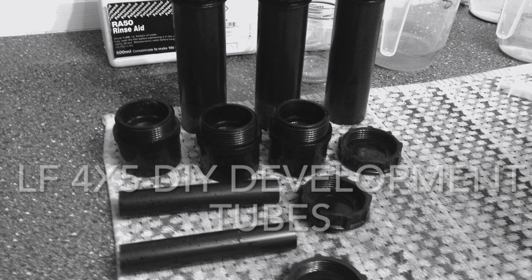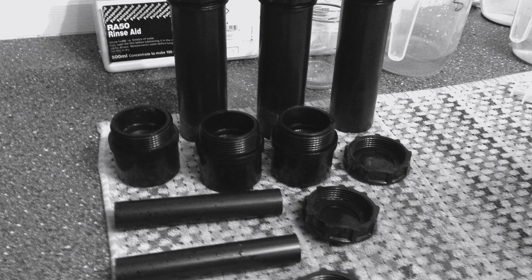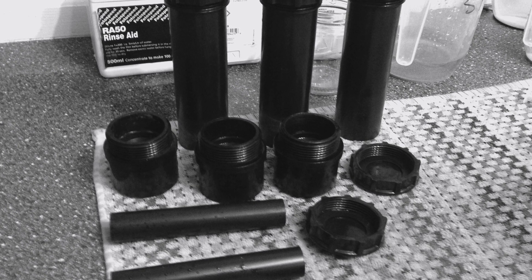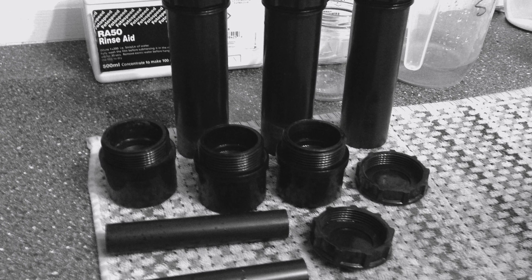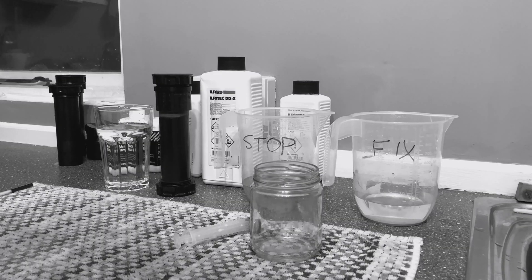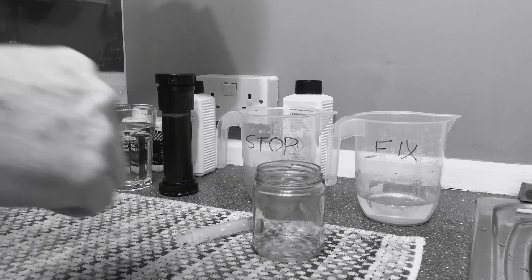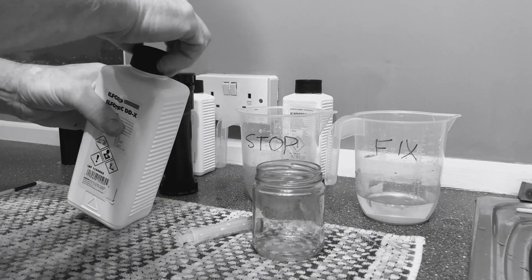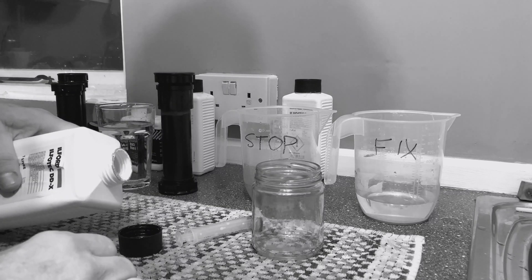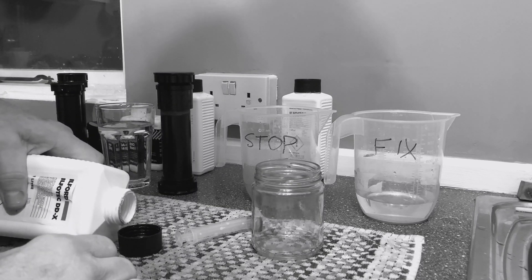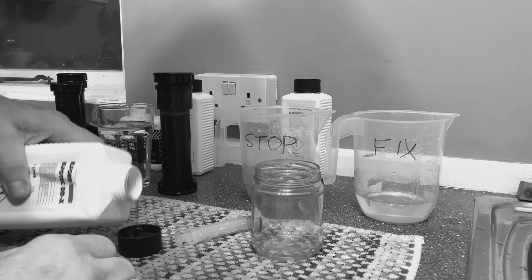In this video I'm demonstrating the development of 4x5 sheet film in homemade development tubes. Each tube contains 100ml of liquid. I'm developing HP5 which I rated at 200 ISO.